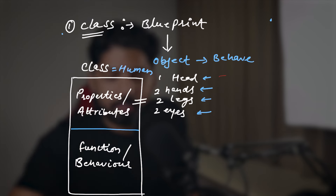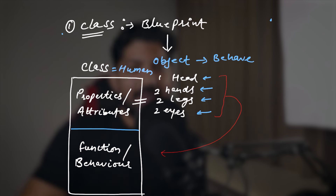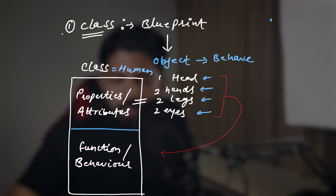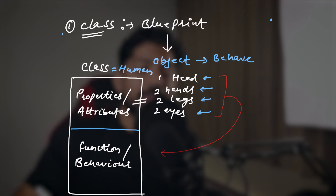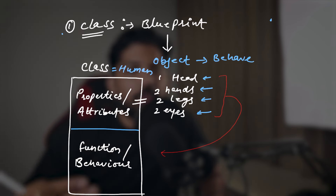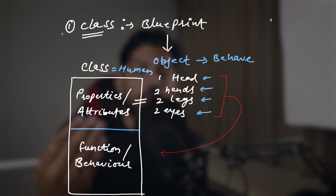This class is just a blueprint applied to all human beings, whether male or female — everyone follows this blueprint. Philosophically, God created this human class blueprint, and all human beings who are created or born are the objects. And all those human beings follow this human blueprint, the human class created by God.